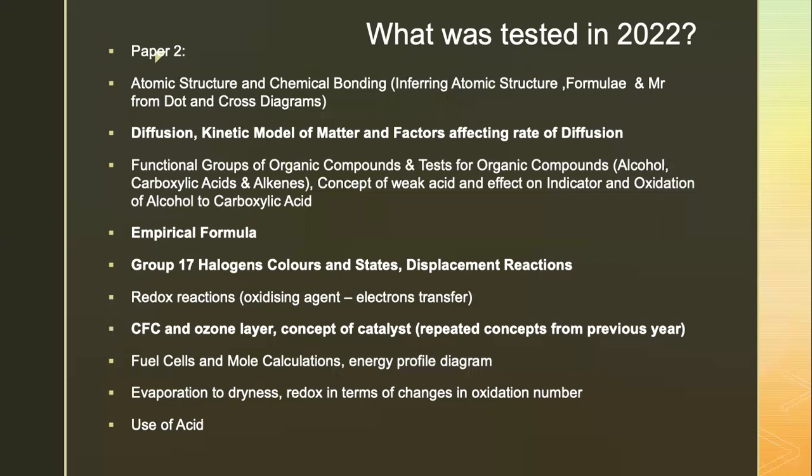Redox reaction in terms of electron transfer came out as predicted. CFC and ozone layer came out — this was a bit shocking because it had come out just two or three years before that and repeated again. The concept of catalyst, a repeated concept from previous years, also appeared. The learning point is you must do your ten year series, because they do repeat concepts — although not the same question. Fuel cells, more calculations, and energy profile diagram comparing catalyzed and uncatalyzed reactions were also tested.